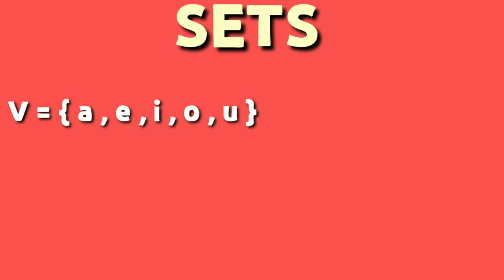Here some sets are given. V is a set of vowels: A, E, I, O, U. N is a set of first five natural numbers: 1, 2, 3, 4, 5.